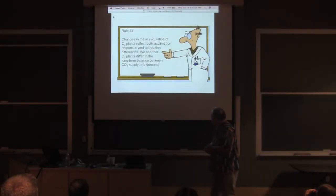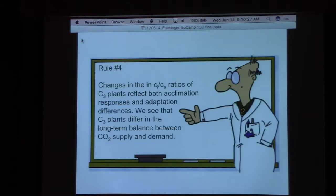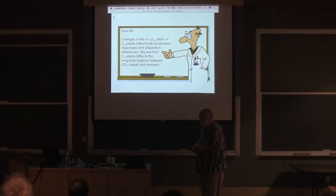So let's go to rule number four then, and that is the variations in CICA ratios reflect both acclimation responses and adaptation differences. We see that C3 plants differ in long-term balance between supply and demand. There's naturally occurring variation in CICA. Some of that is genetic, some of that is environmental.